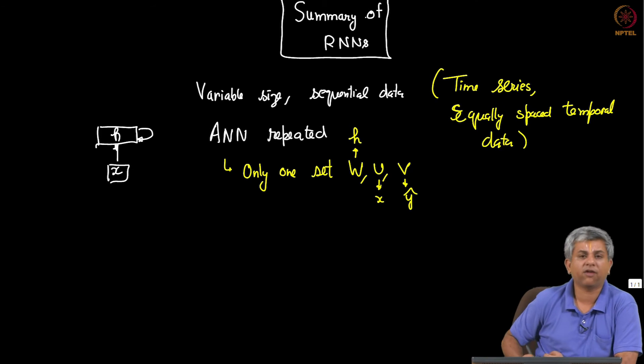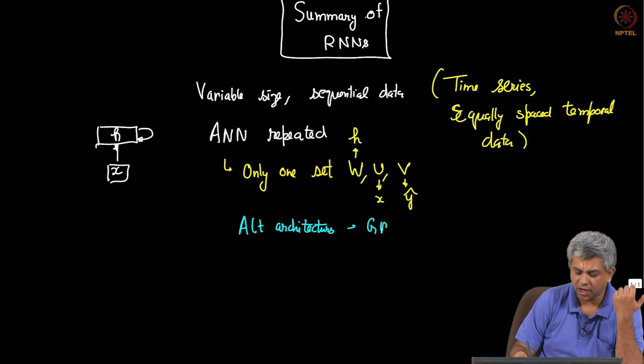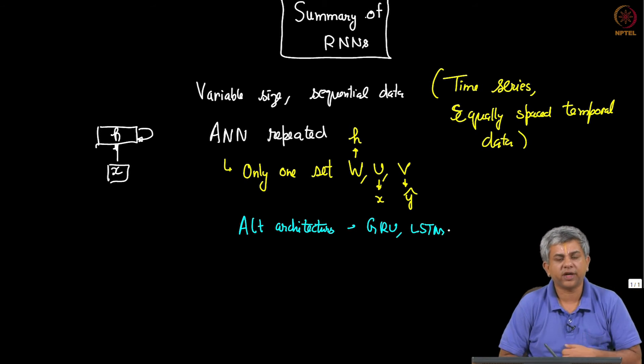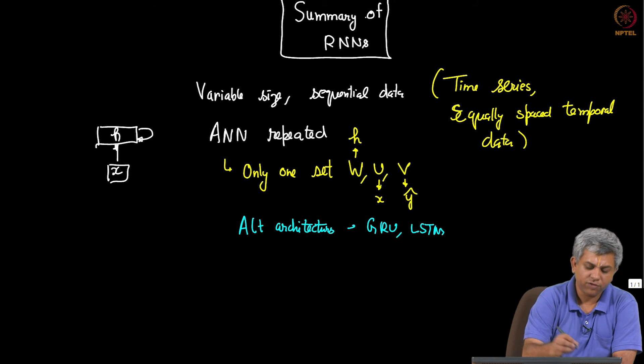We saw that we have gradient problems. The gradient problems can either be vanishing gradient or exploding gradient. For vanishing gradient we use alternate architectures, specifically GRU and LSTM, and for exploding gradient we use gradient clipping.